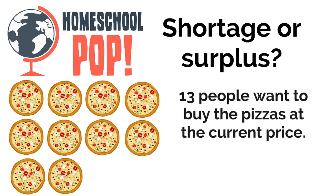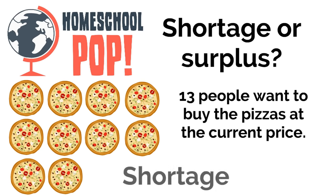A pizza shop. Let's say a pizza shop has 10 pizzas, and there are 13 people who want to buy the pizzas at the current price. So there are 10 pizzas and 13 people who want to buy a pizza at the current price. Is there a shortage or surplus? Yeah, a shortage. There are not enough pizzas to sell to everyone who's willing to buy at that current price. They need to make more pizza so there's no longer a shortage.